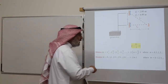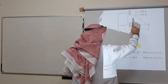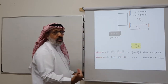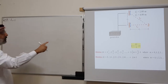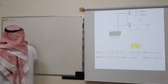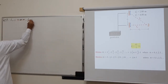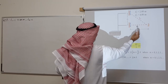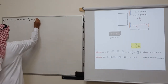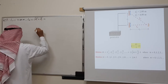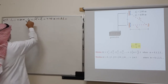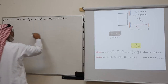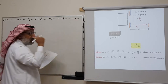First, find the path length difference. L1 = d2 = 4 meters. L2 = sqrt(d1² + d2²) = sqrt(4 + 16) = 4.47 meters. So delta-L = L2 minus L1 = 4.47 minus 4 = 0.47 meters, and that is fixed since nothing is moving.